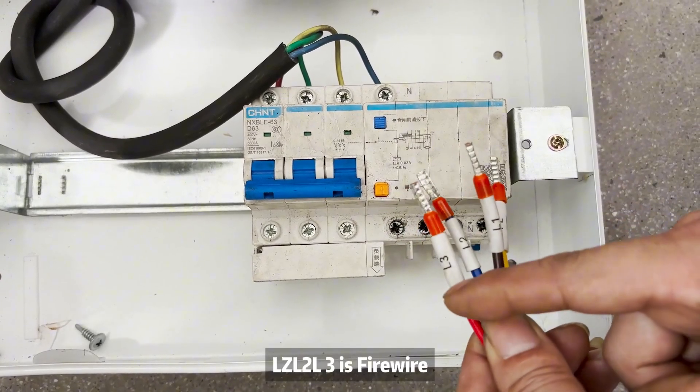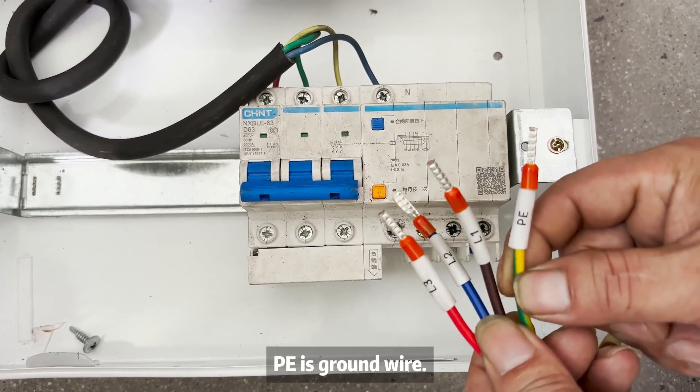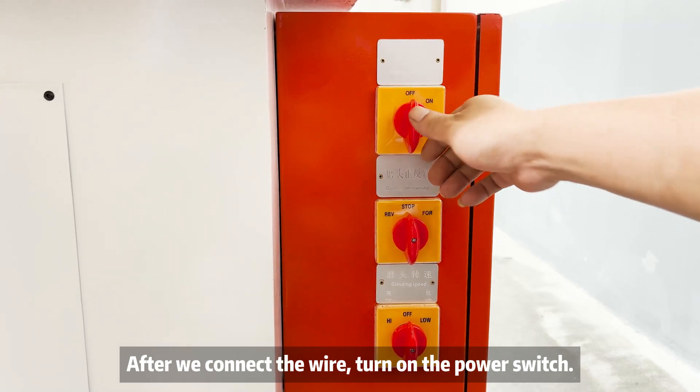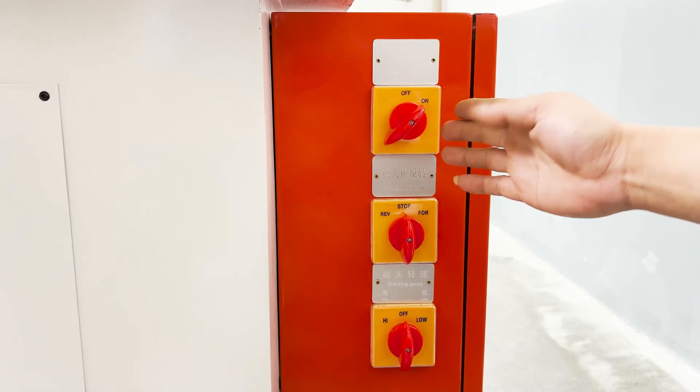L1, L2, L3 are fire wires. PE is ground wire. After we connect the wire, turn on the power switch. It will power on.